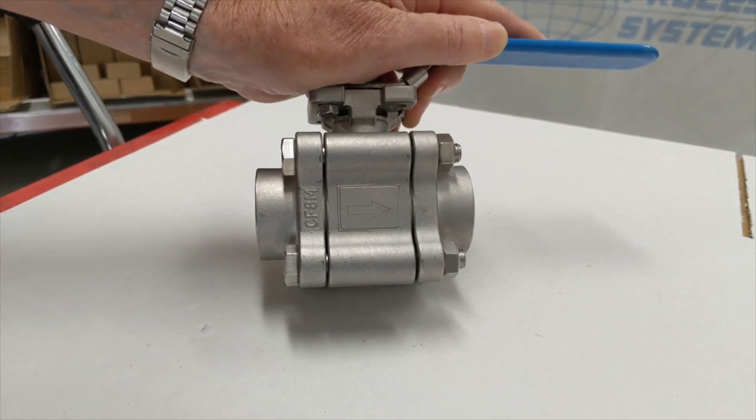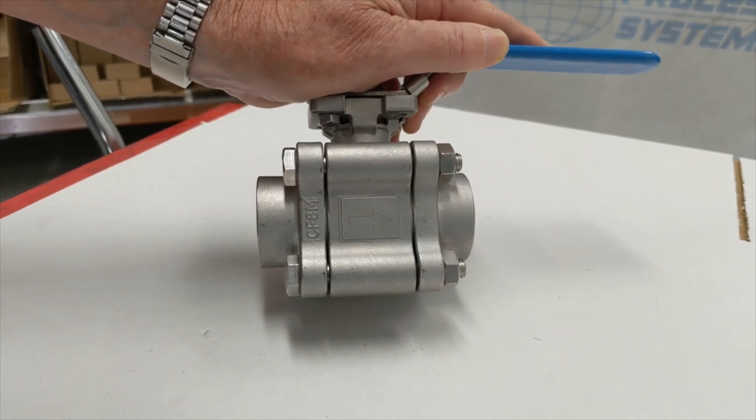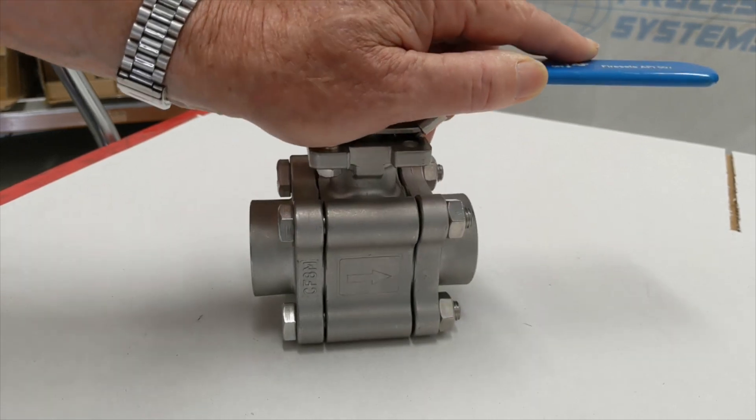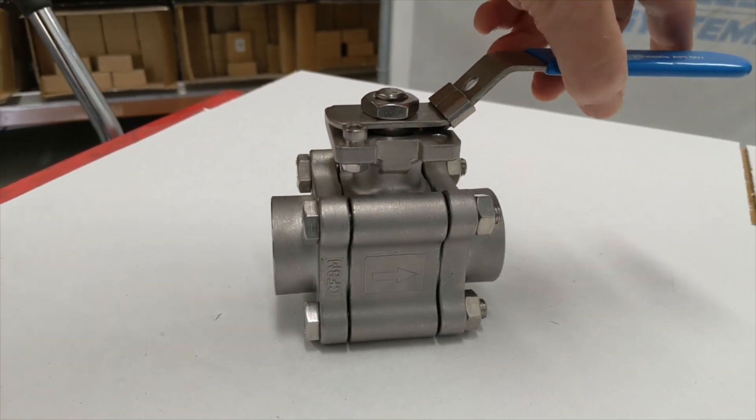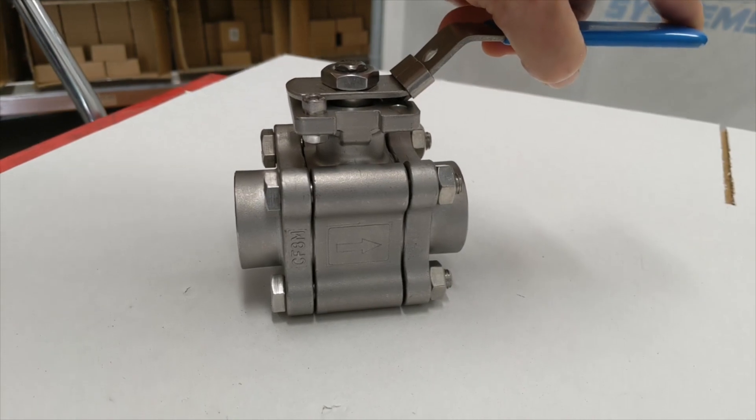That helps ensure that the actual seat is well constructed and well closed. If I close that valve off, we can have a look at the venting ball.